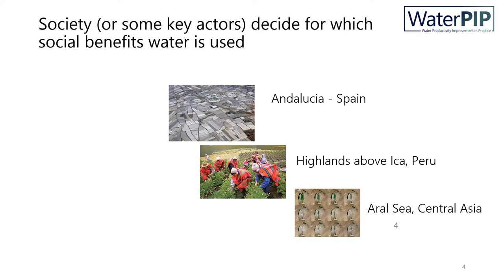A third example is the Aral Sea in Central Asia — an example of agricultural benefits versus environmental benefits. The Aral Sea shrinks and dries up since the 1960s, largely due to increased water consumption for agriculture. So society decided here that the main social benefit of water is agricultural production, and not water for conservation of species and habitats of the Aral Sea. In the online text, you can read more about these very different cases.